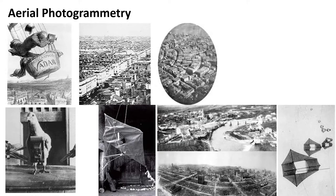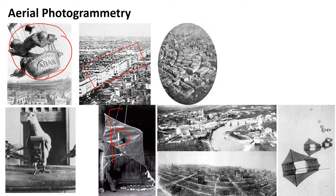Let us understand how aerial photogrammetry started. There was a photographer who was very enthusiastic about capturing various data. He first tried to capture photographs of an area with the help of a balloon. He understood that by looking at photographs from the top, we get a more pictured view and understand many things. So he said let's use this technology for capturing areas. Furthermore, when this concept evolved, they said instead of a balloon we can use kites — cameras were attached to large kites that could fly to higher heights.